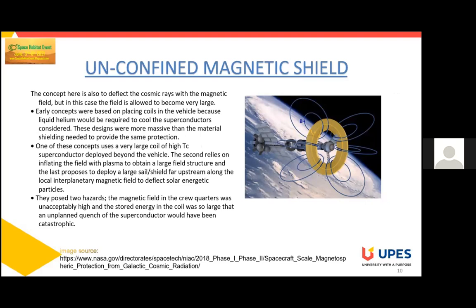The electron cloud also needs to be permanently in motion to remain confined by the field, similar to the confined magnetic shield. In an unconfined magnetic shield, the concept is exactly similar; however, the field is not confined and its size can be extremely large. One problem that may arise is cooling down the superconductor wires used. This design takes both material and intellectual resources to set up successfully. Using a large superconductor coil imposes a challenge of heavy mass being carried on a spacecraft, similar to the problem of the confined magnetic shield.